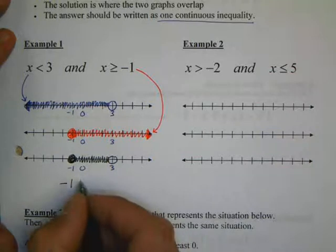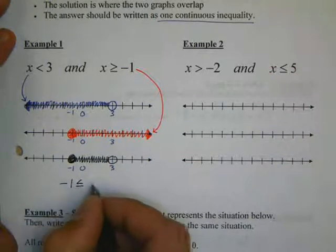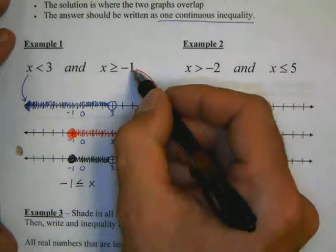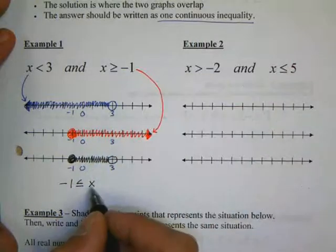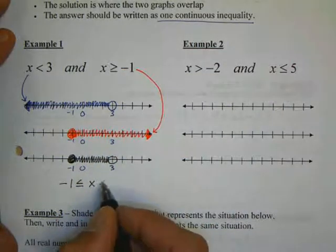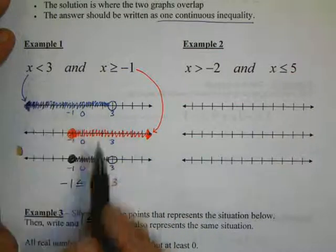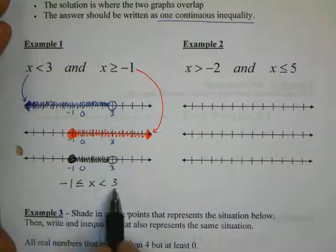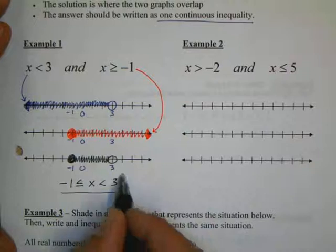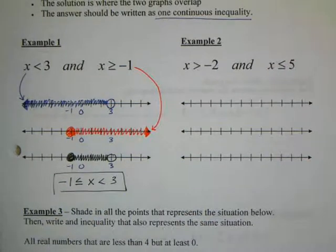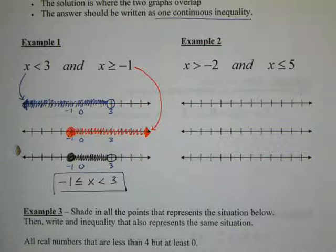So, the result is everything from negative one to positive three. Now, we need to write this down. We write it down just like the number line says. Negative one on one side is less than or equal to x. That's this one, red backwards. And x is less than three, which is the first one written right here.